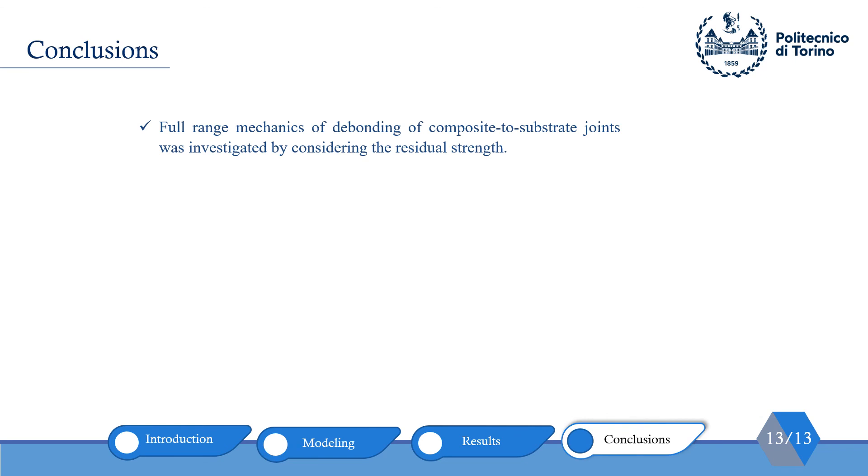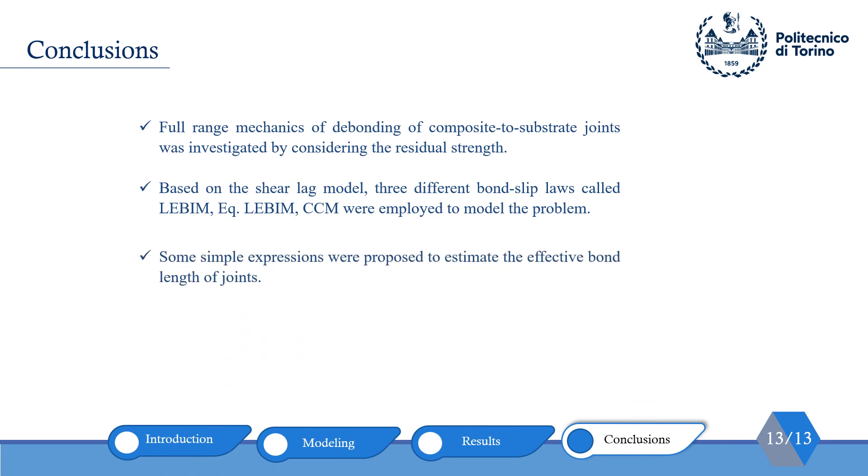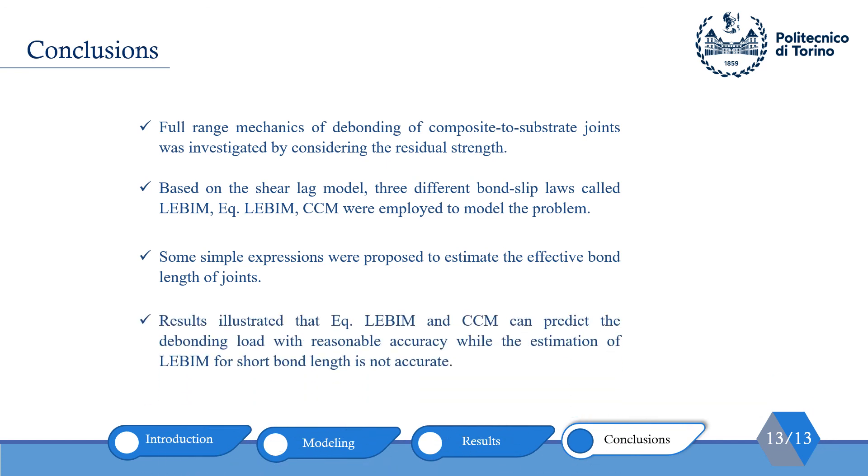To conclude, we modeled full-range mechanics of debonding of composite substrate joints by considering residual strains. We used shear-lag model with three different bond slip laws. Also, we proposed some simple expressions to estimate the effective bond lengths. Finally, the results illustrated that equivalent LEBIM and cohesive crack model can predict debonding with reasonable accuracy, while the accuracy of the LEBIM for short bond lengths was not really good.